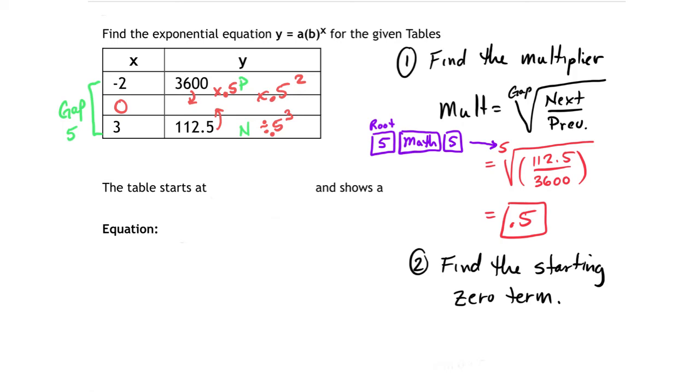So if I take 3600 and then times 0.5 to the second power, you get an answer of 900. So 900 is the actual zero term.